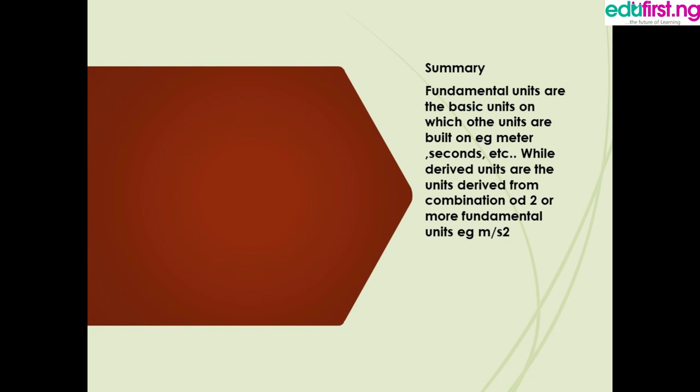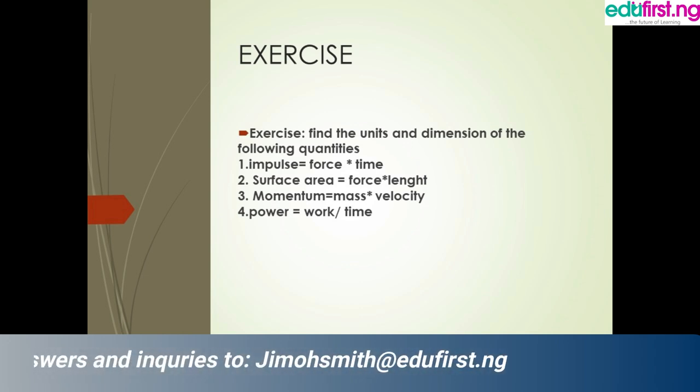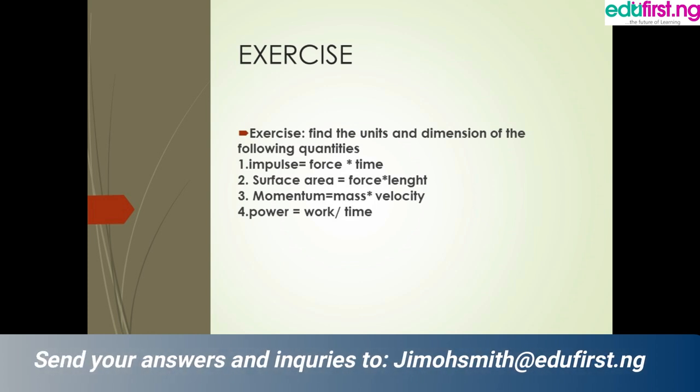Derived units are the units that have been derived from combining two or more units together. Now you can solve these questions: Impulse is force times time — you know force and you know time, show their dimension. Surface area is force times length — combine them and give the unit. Momentum is mass times velocity — combine the two and give the answer. Power is work over time — combine them and give the units and the dimensions.